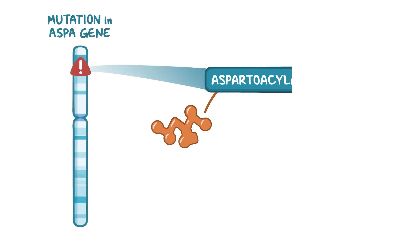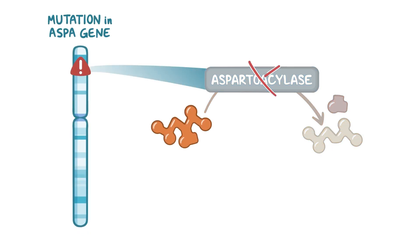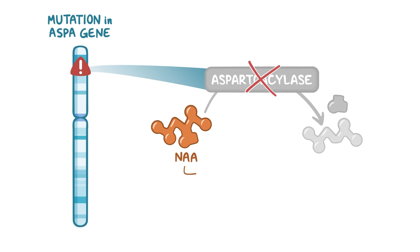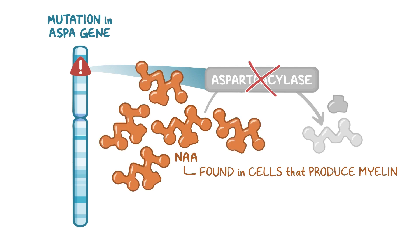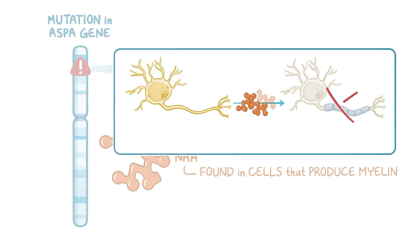Specifically, Canavan disease results from a mutation in the ASPA gene, which causes a deficiency in the enzyme aspartoacylase. This enzyme breaks down a molecule called N-acetyl-L-aspartic acid, or NAA, which is mainly found in specialized cells that produce myelin. Impaired breakdown of NAA and its accumulation in the brain is thought to interfere with myelin production, but the exact mechanism is not well understood.